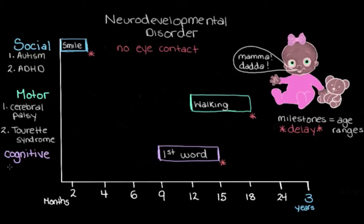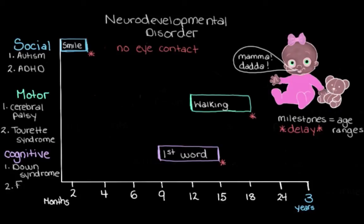Finally, our cognitive milestone section. Here's where we'd put disorders like Down Syndrome, which manifests as various intellectual disabilities like problems with learning, memory, or even language. We might start to consider an intellectual disability like Down Syndrome if our kid isn't meeting some of these cognitive milestones, like not saying their first word by about this age range. Let's also put down Fetal Alcohol Spectrum Disorder, or FASD, over here with Down Syndrome — another disorder where people have trouble with quite a few different intellectual tasks like learning or speaking.